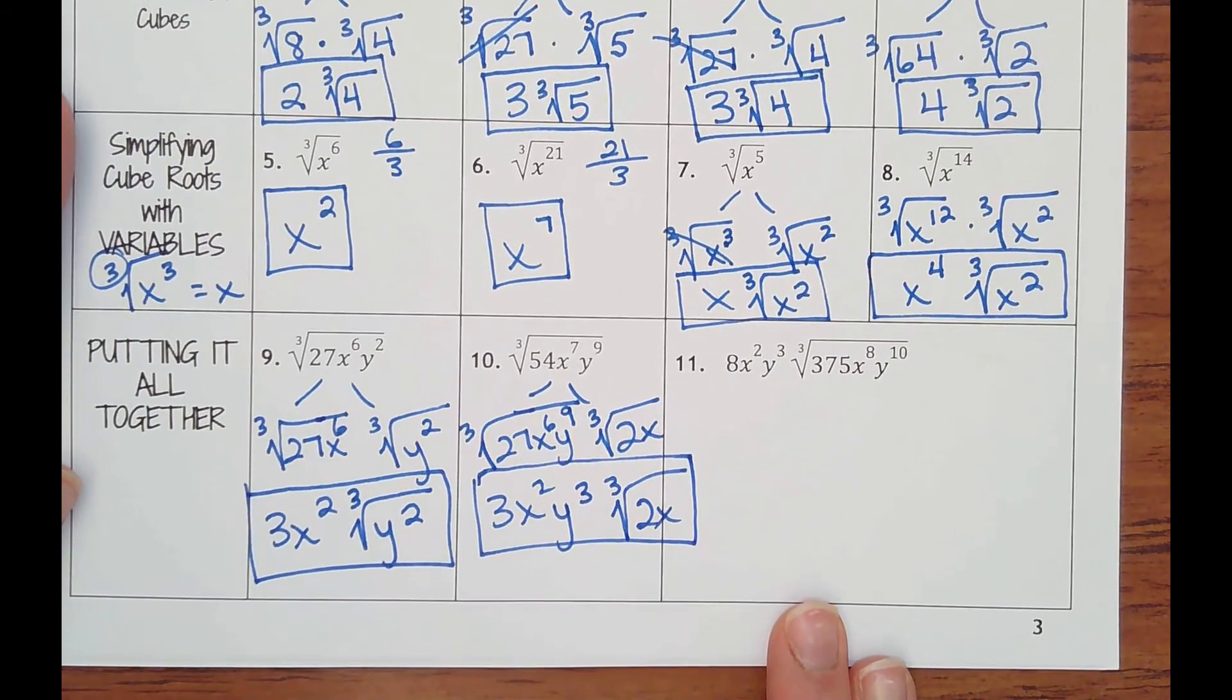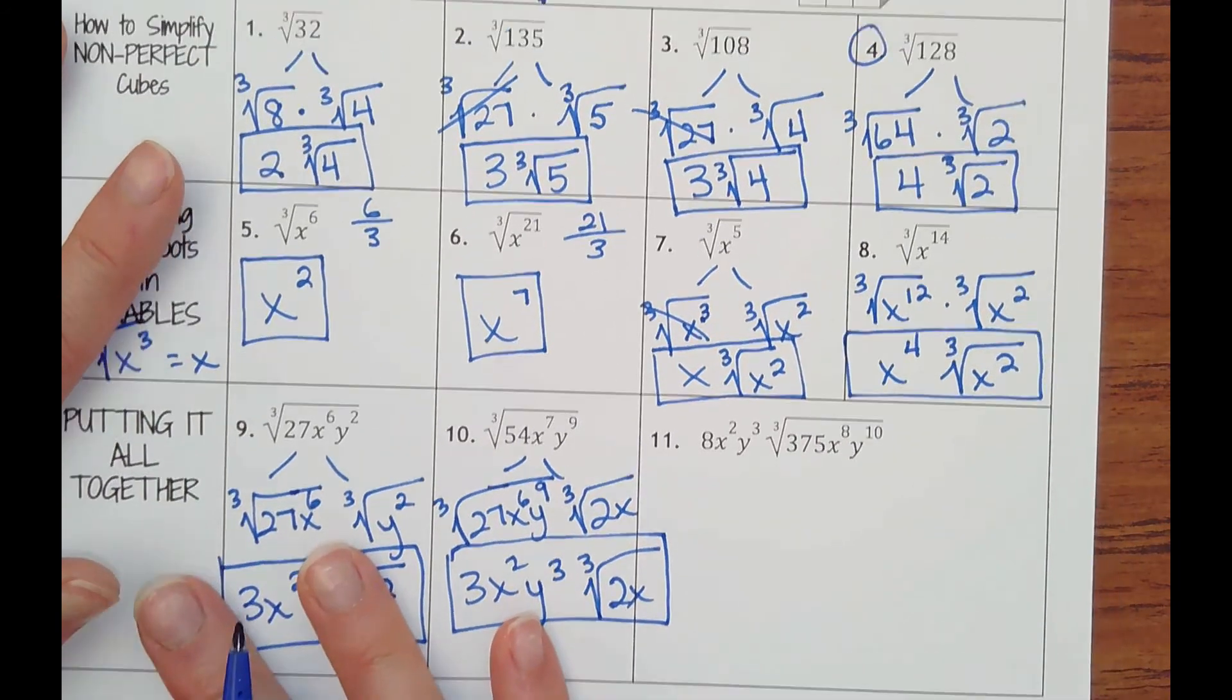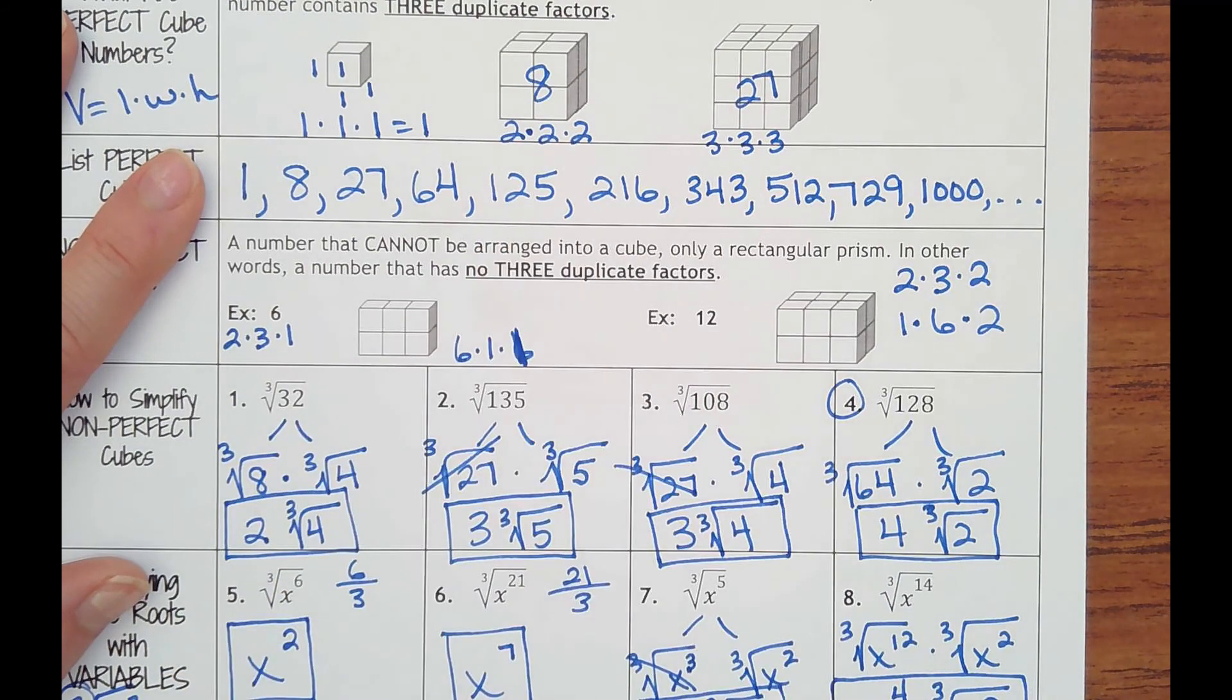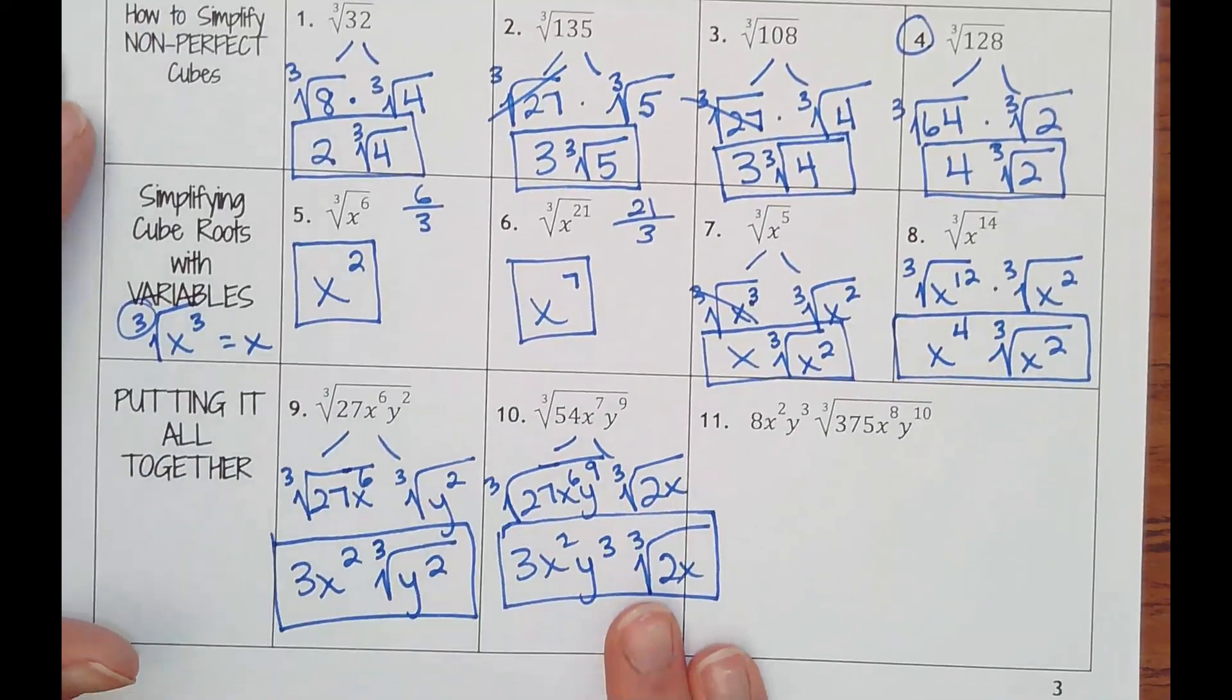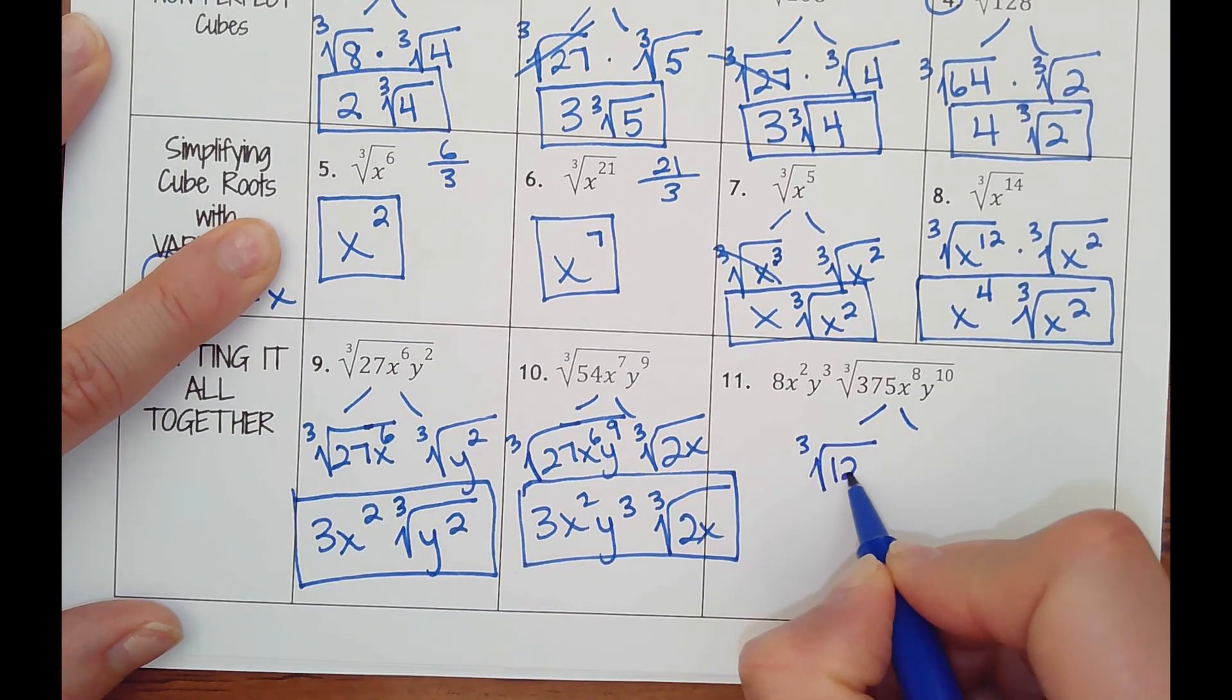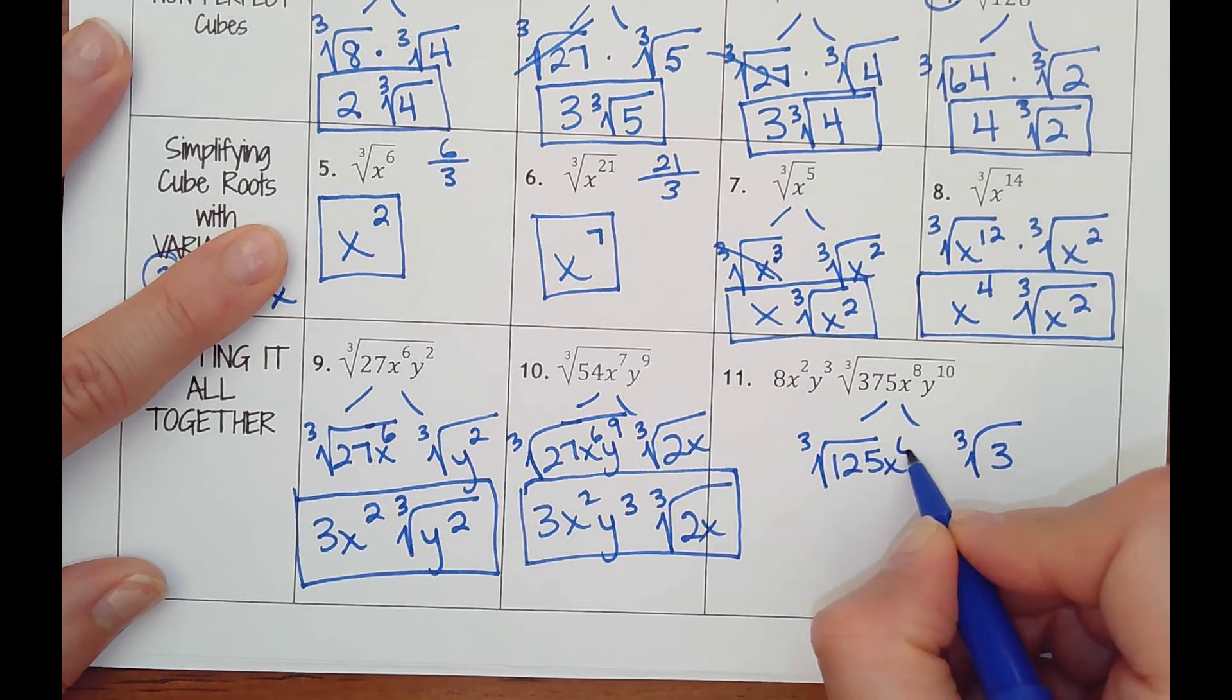And 11 is a little more of a challenge, but still not bad. 375, it's not on our list, but I'm liking 125. 375 by 125 is 3. Yeah, I could have done that in my head, but I'm being lazy.